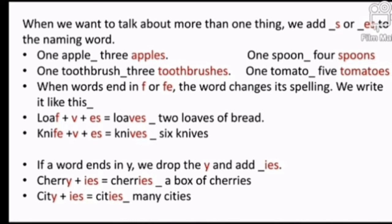If a word ends in Y, we drop the Y and add IES. Agar word ke end mein Y diya hai, toh Y ko hatakar IES lagana hai — but Y ke pahle consonant hona chahiye. Agar Y ke pahle vowel ho, toh sirf S lagana hai, Y nahi hatana. Cherry → cherries. City → cities.